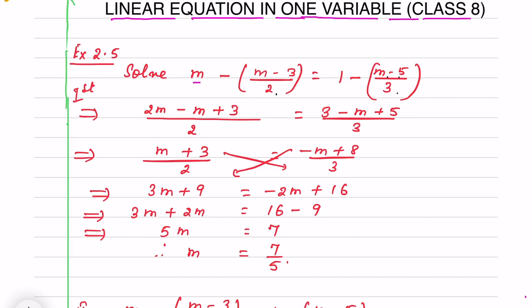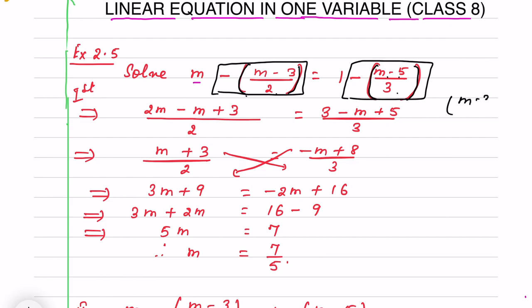You see here (m minus 3) by 2 — I have given brackets so that it will be easy to simplify, and when you open the bracket you won't make a mistake with the sign. Same way (m minus 5) by 3 — I have given brackets because you see an outside minus sign is there, so when you open the bracket you won't make a mistake: minus into plus will be minus, and minus into minus is plus.